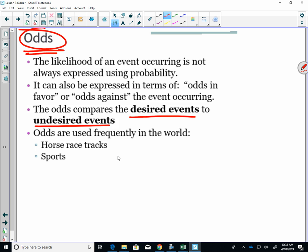I'm going to say that again. Odds is good things versus bad things. Probability is good things versus all possibilities. Odds are used frequently in the world of horse racing and sports. What are the odds that the Leafs are going to win the Cup? Zero.